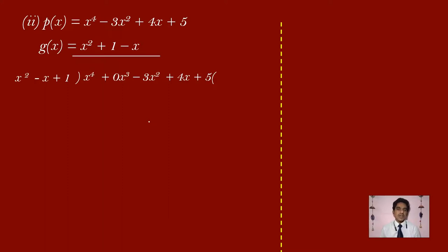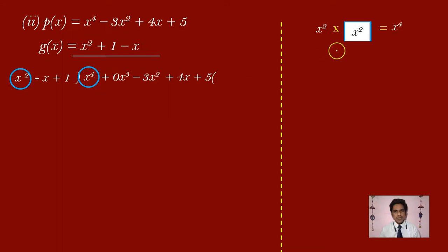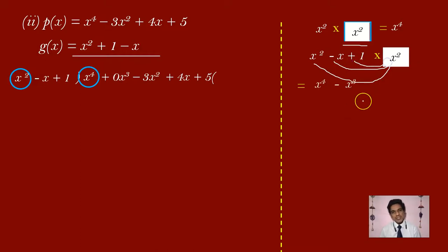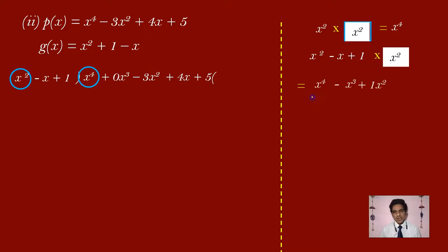Let us continue with the regular division procedure. The first term in the dividend is x power 4, and the divisor's first term is x power 2. x power 2 multiplied by x square gives x power 4, so we need x square. Multiply the whole divisor x square minus x plus 1 by x square: x square into x square gives x power 4, minus x into x square gives minus x power 3, and 1 into x square gives plus x square.